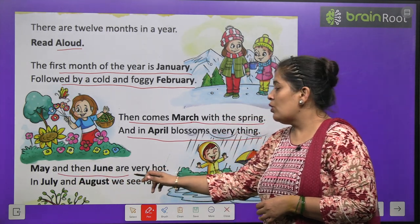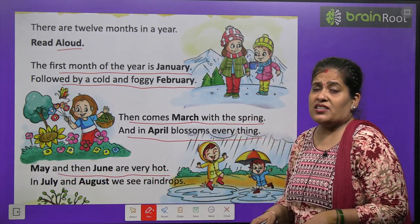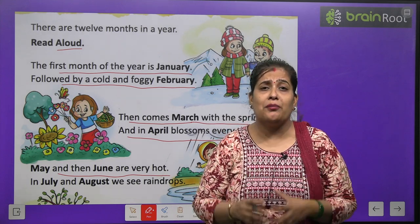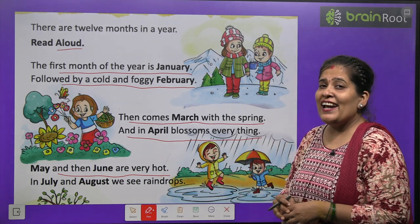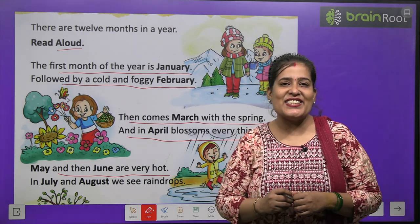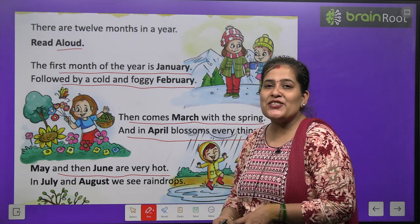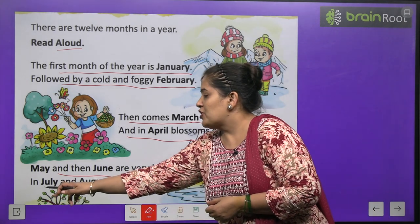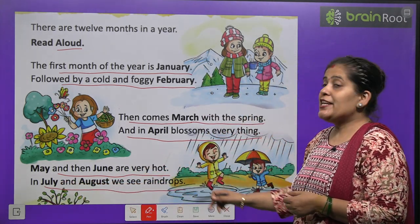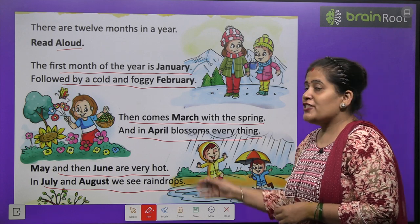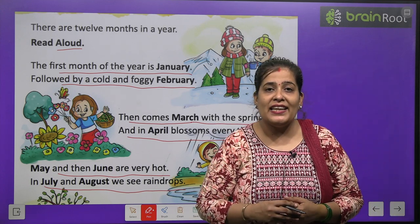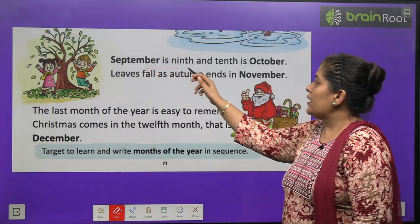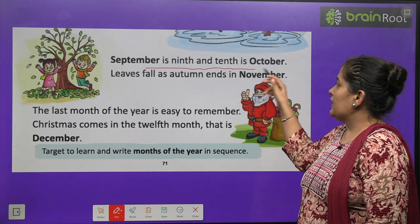May and then June are very hot. Aur uske baad May aur June mein bahut garmi hoti hai. June mein aur kya hota hai? Sab bachon ki Summer Vacations hoti hain. Sab bachon ko kaun se month ka wait hota hai? June ke month ka. In July and August, we see raindrops. Aur July aur August ke month mein humein kya dekhne ko milti hai? Barish ki boondein.